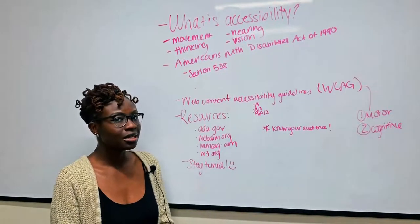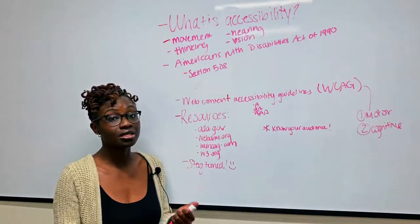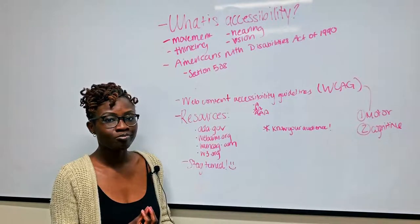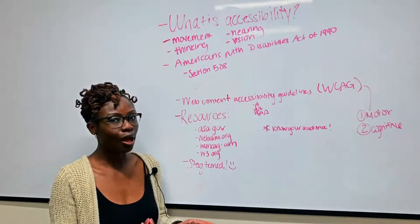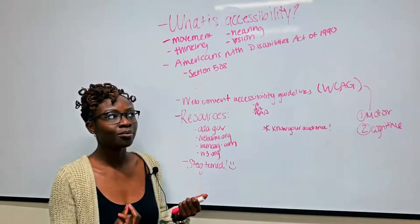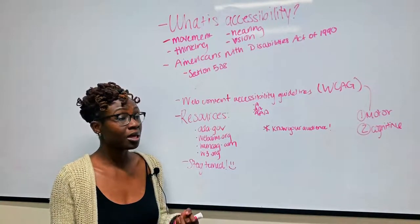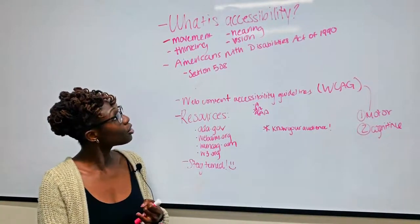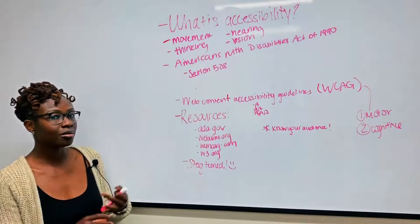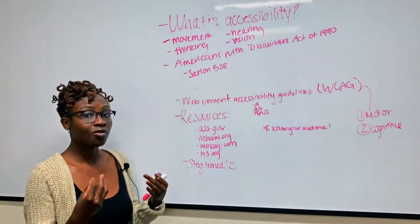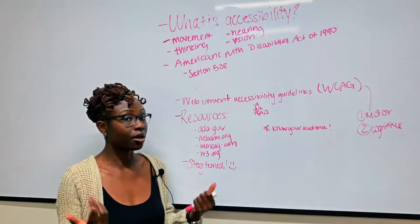What's a disability? A disability can be considered an impairment that affects how the person interacts with the world around them. This could be a motor impairment, a cognitive impairment like the way they think, a visual impairment, or a hearing impairment.